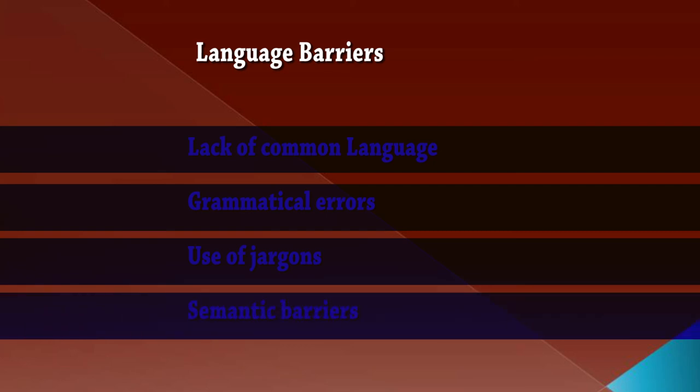Semantic barriers arise from similar-sounding words that create confusion — for example, 'there' and 'their', 'bat' and 'bat', 'tail' and 'tale'. In Hindi, examples include 'kal' and 'kal', or 'sona' and 'sona'. These similar words can disturb the flow of communication and are also classified as language barriers.